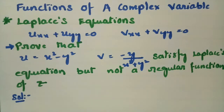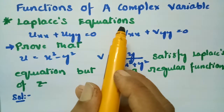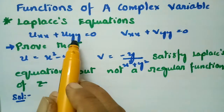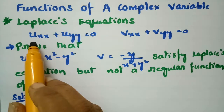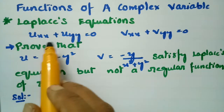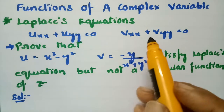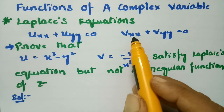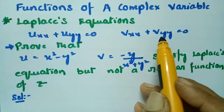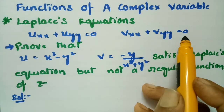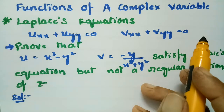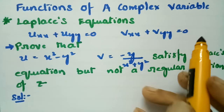In today's video, I am going to explain what are Laplace equations. This topic is from functions of a complex variable. Laplace equations are: uxx plus uyy is equal to 0, which means ∂²u/∂x² + ∂²u/∂y² = 0. And also ∂²v/∂x² + ∂²v/∂y² = 0. Then we say that these two are Laplace equations.